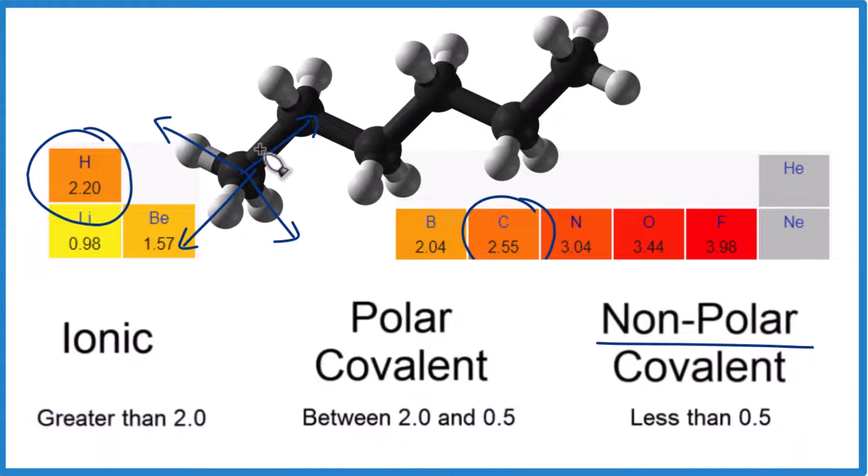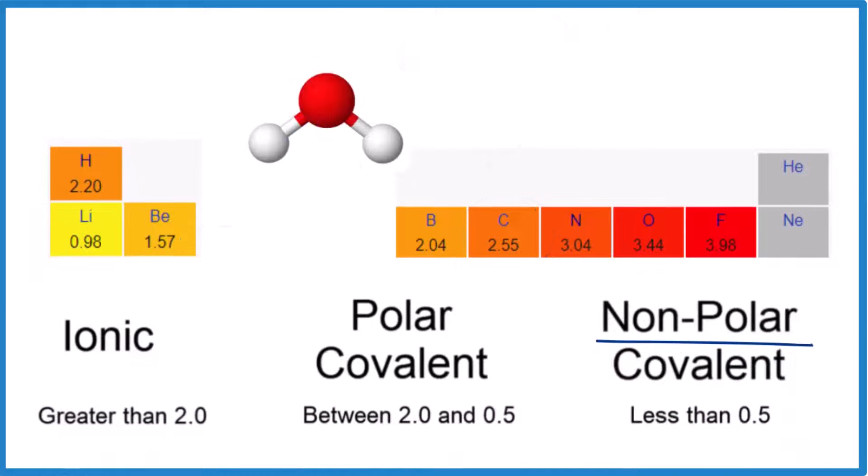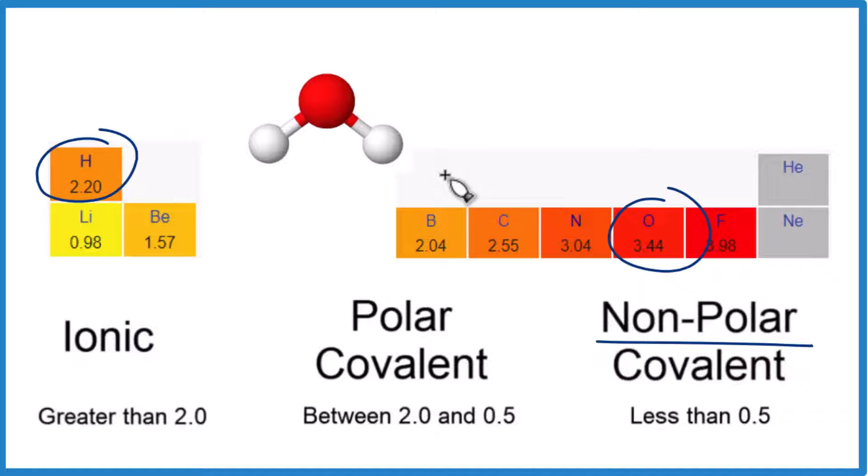Let's look at a polar molecule just to see the difference. So water, we have hydrogen here, and the red is oxygen. And you can see the difference here, it's greater than 1. It looks like 1.24. So water is going to be a polar covalent molecule because it's between 2.0 and 0.5.